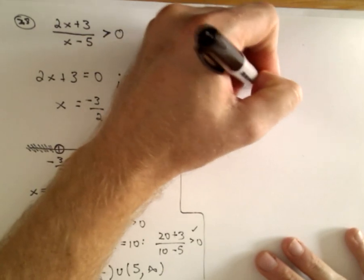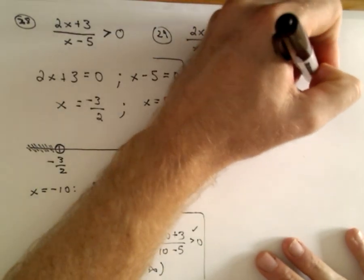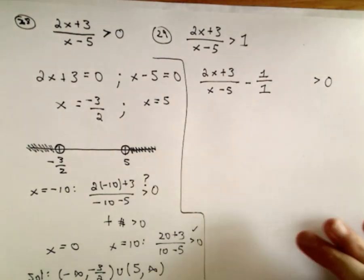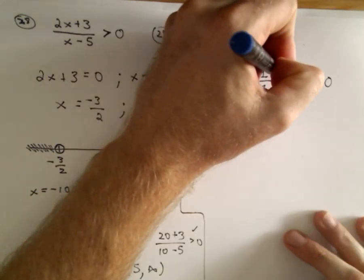And again, we want this to be greater than 0. I'm leaving a little space because, again, I want a single fraction on the left, so I'm going to get common denominators. So I would multiply numerator and denominator by x minus 5.